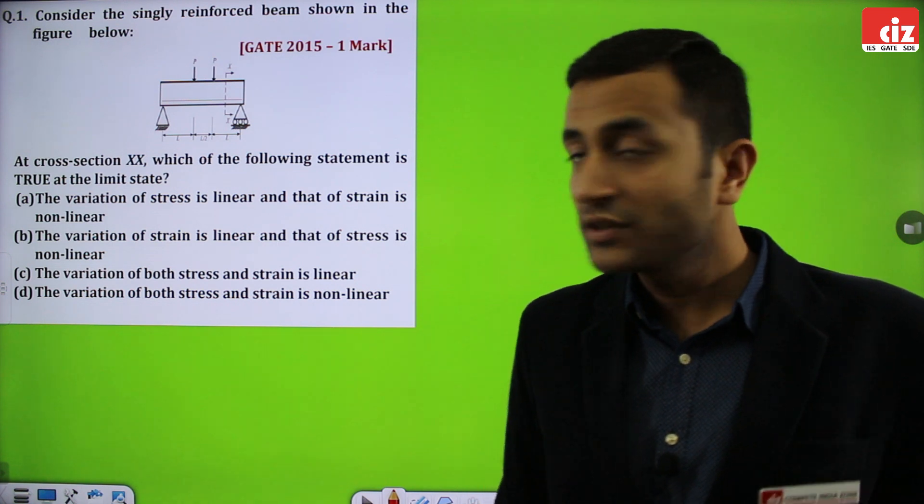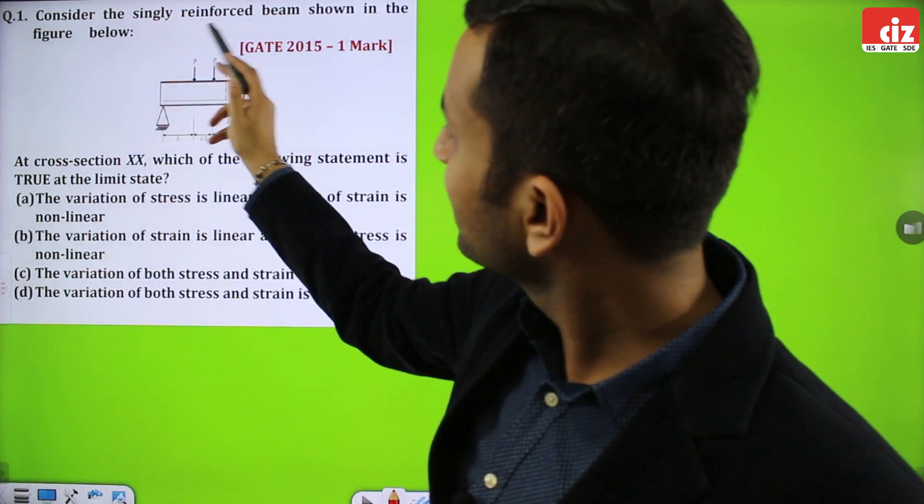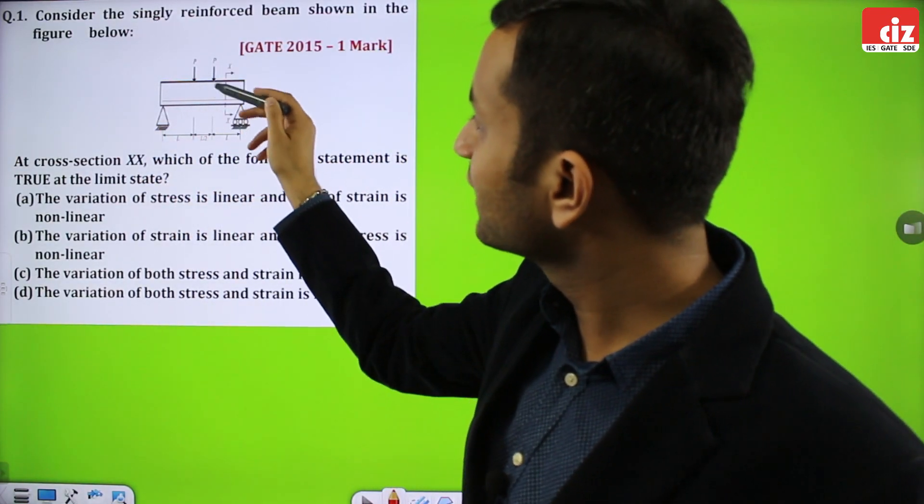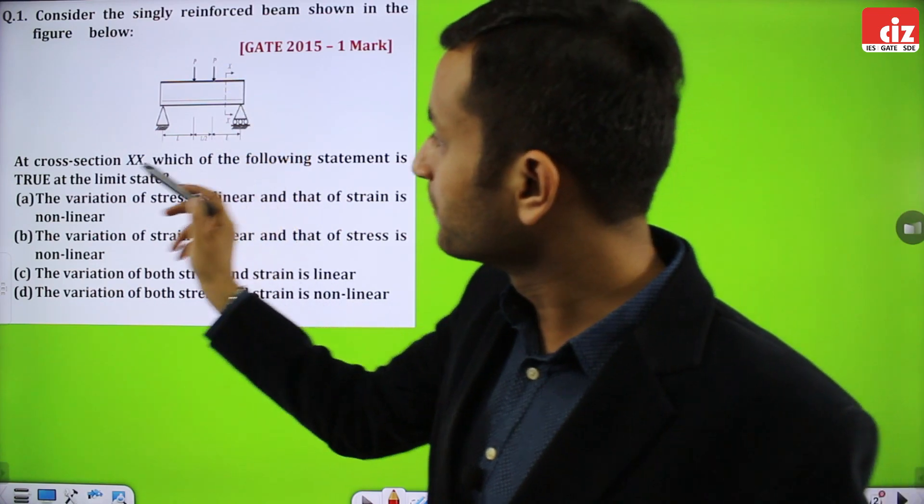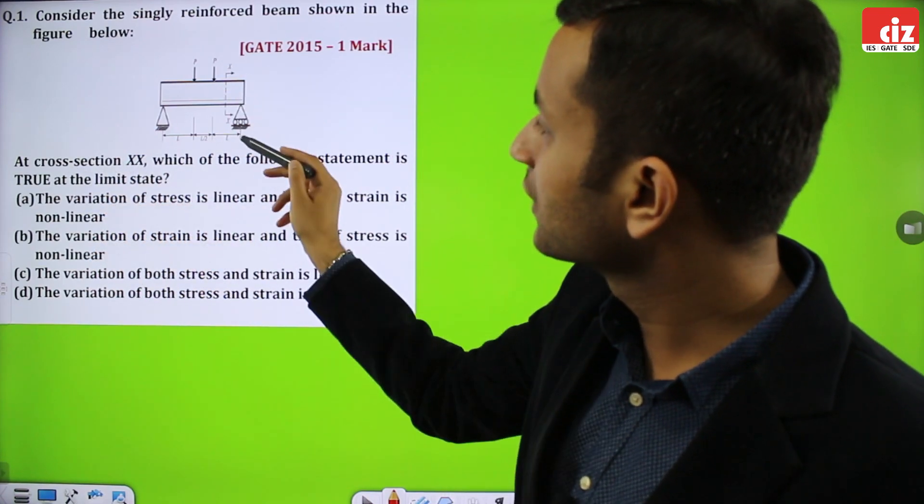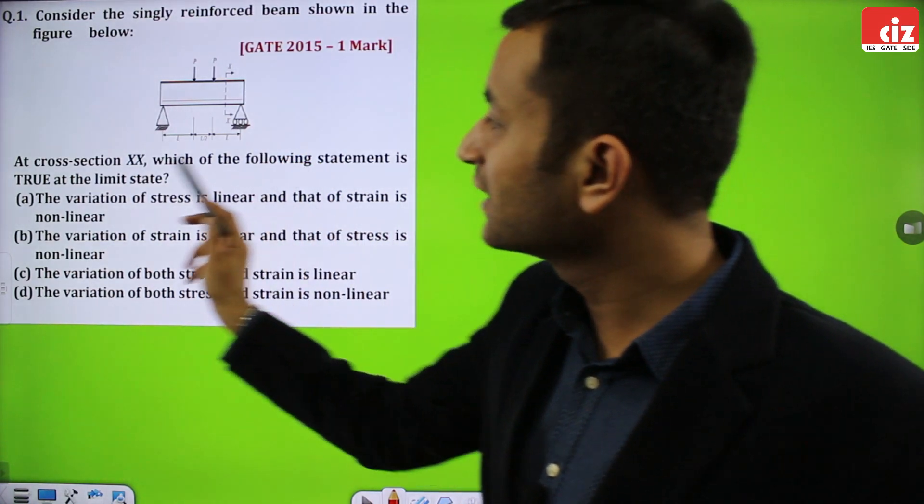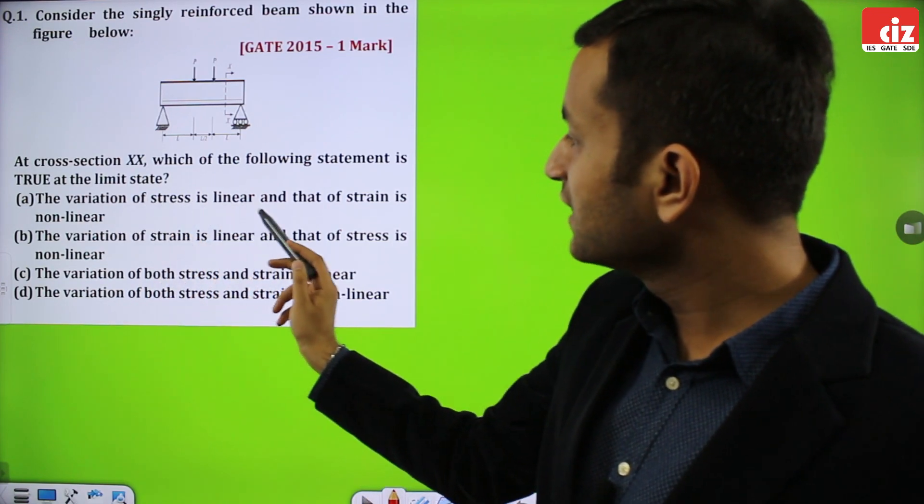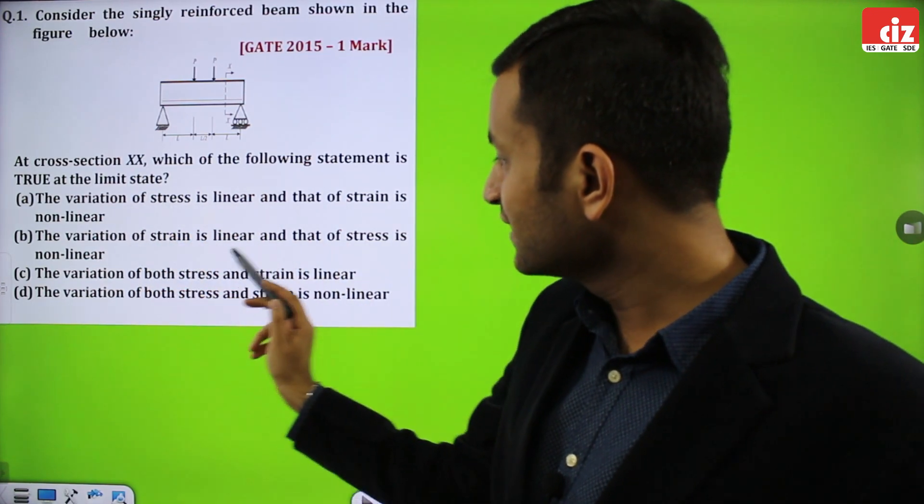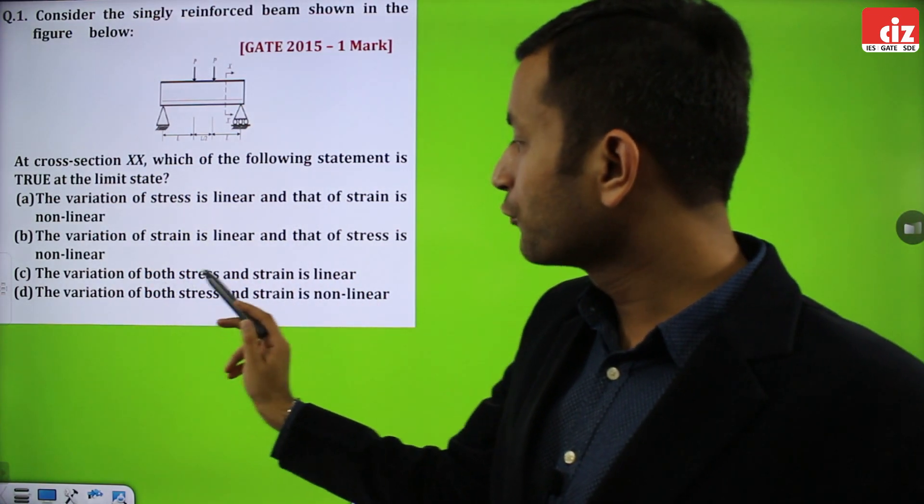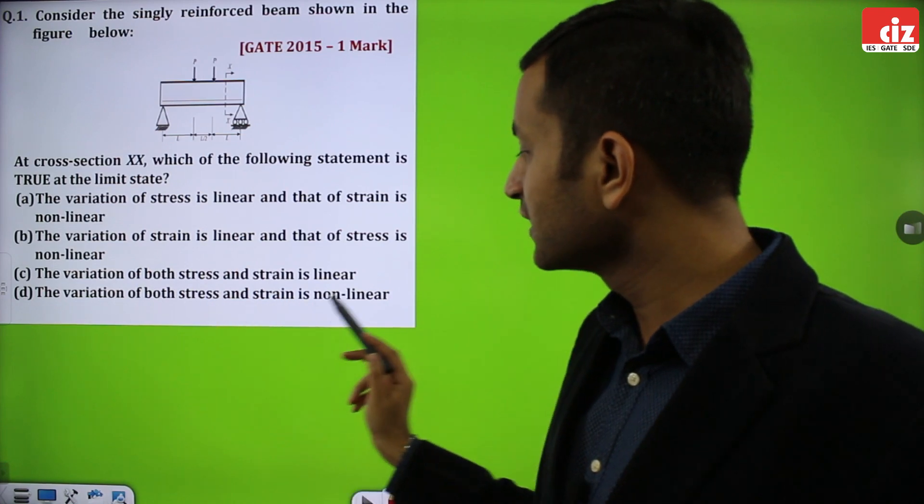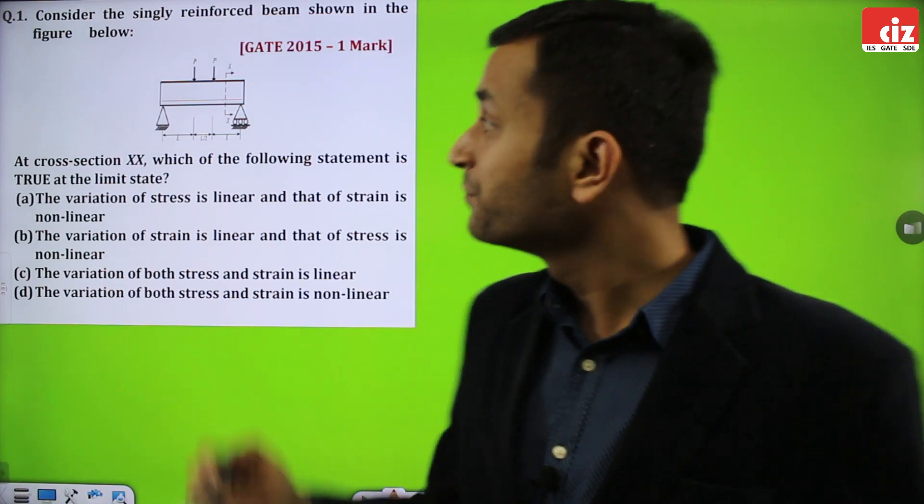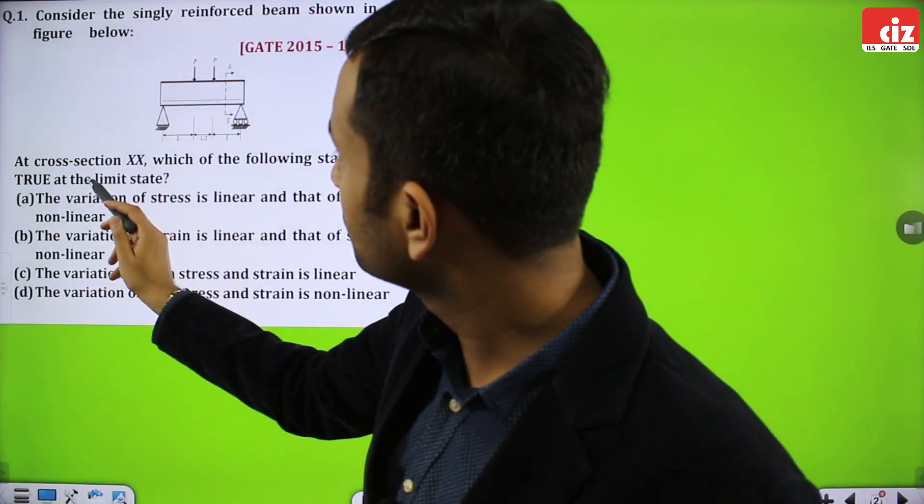Starting with the first question. Consider the singly reinforced beam shown in the figure below. This is a singly reinforced beam. There are two point loads acting on the beam. At cross section XX, which of the following statement is true at the limit state? Here we have to see stress and strain variation as per the limit state.